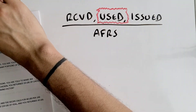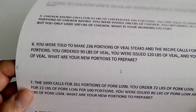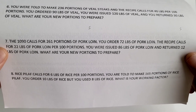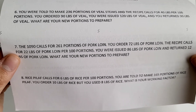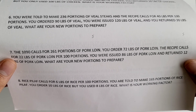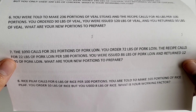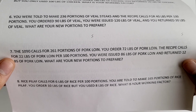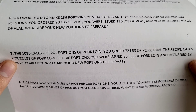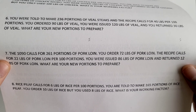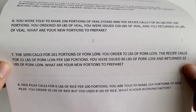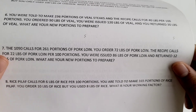We're going to do number seven and eight. Number seven: the 1090 calls for 261 portions of pork loin. You order 72 pounds of pork loin. The recipe calls for 22 pounds of pork loin per 100 portions. You were issued 86 pounds of pork loin and returned 12 pounds of pork loin. What are your new portions to prepare?